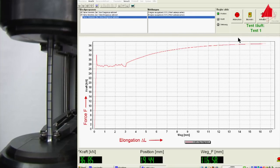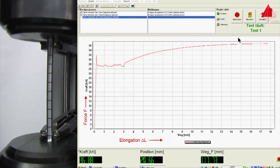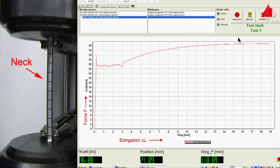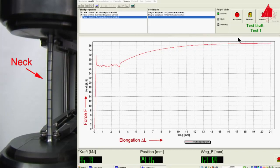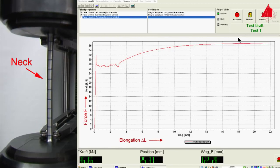As soon as the maximum force is reached, a neck begins to form at one point of the test piece. All further plastic deformation now only takes place at the neck, and eventually the test piece fractures there.